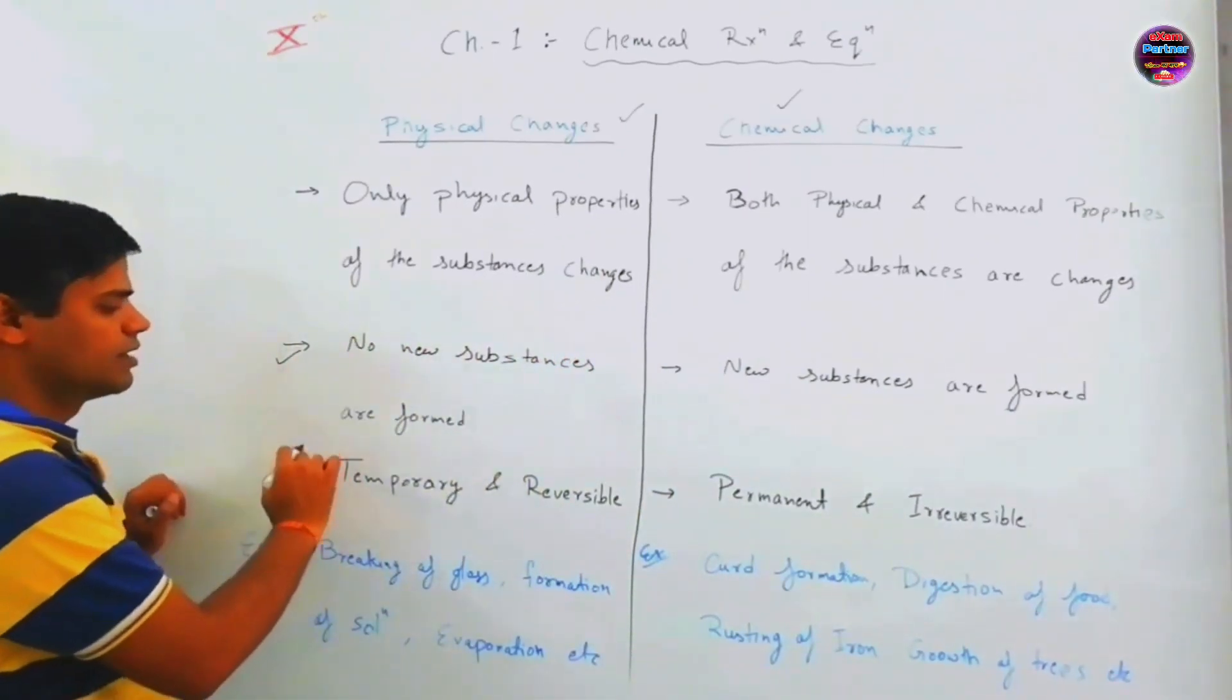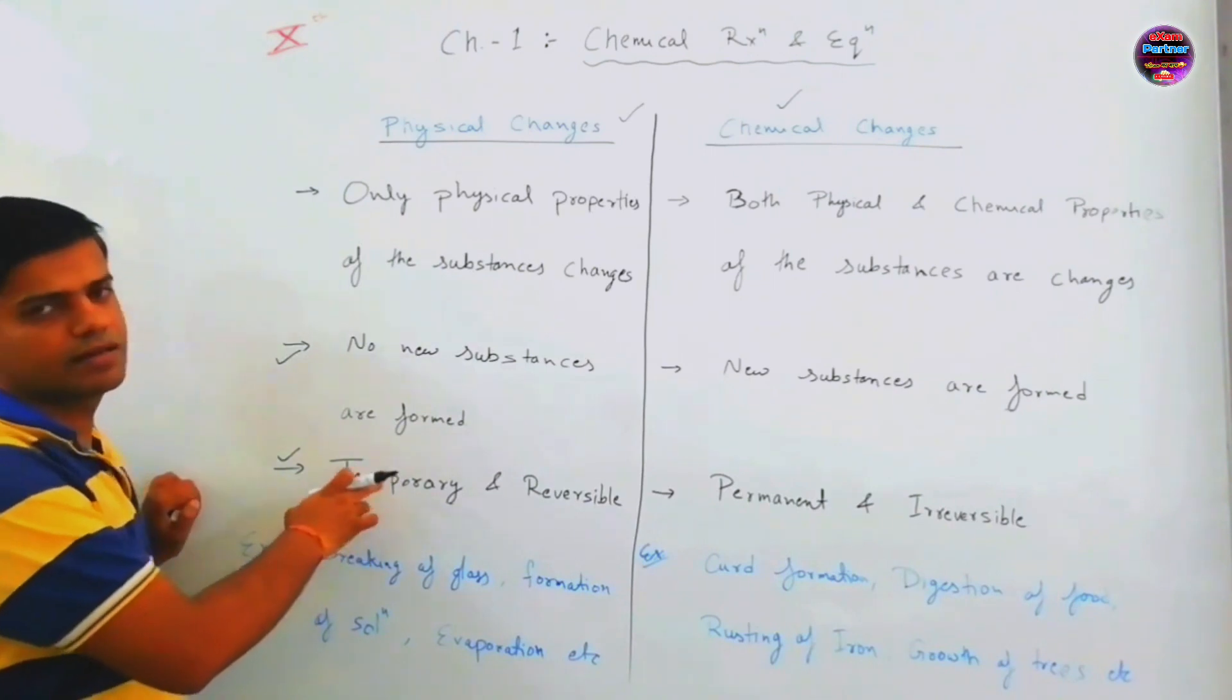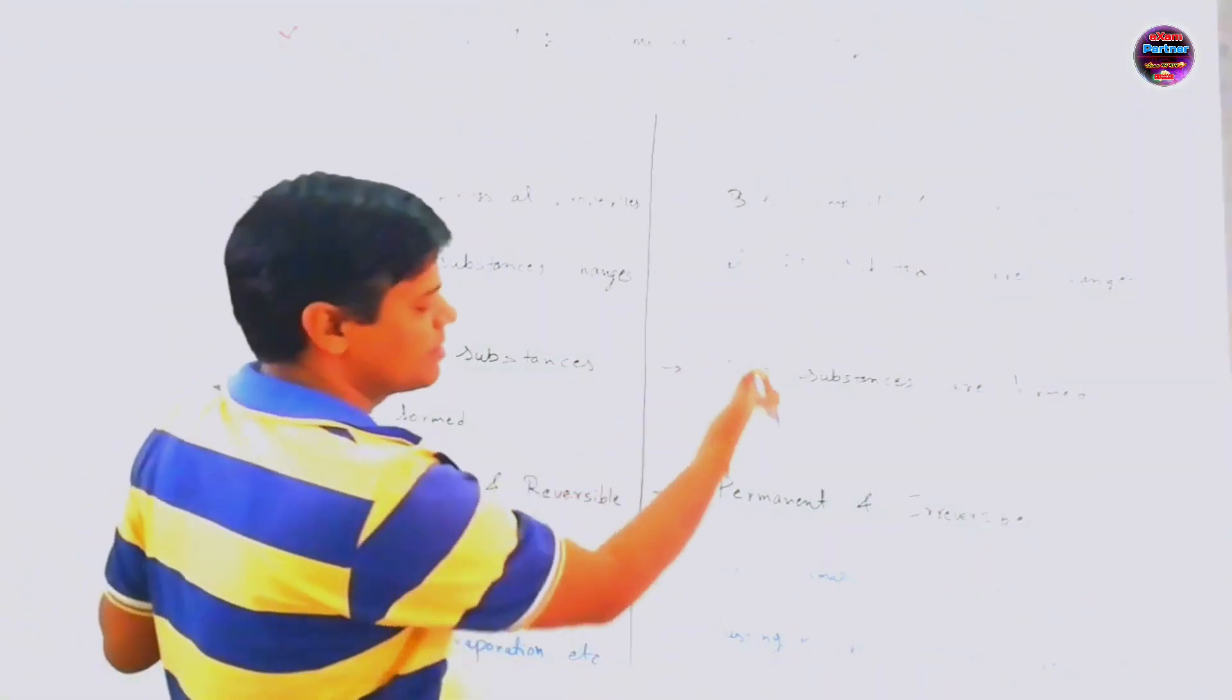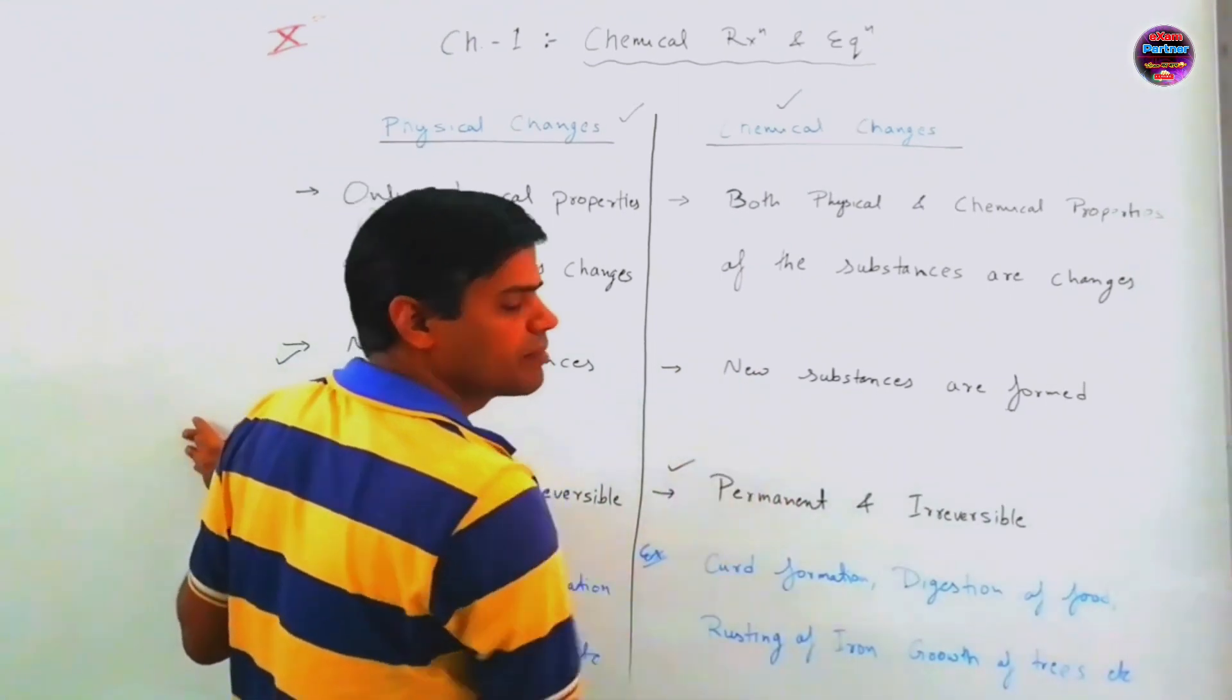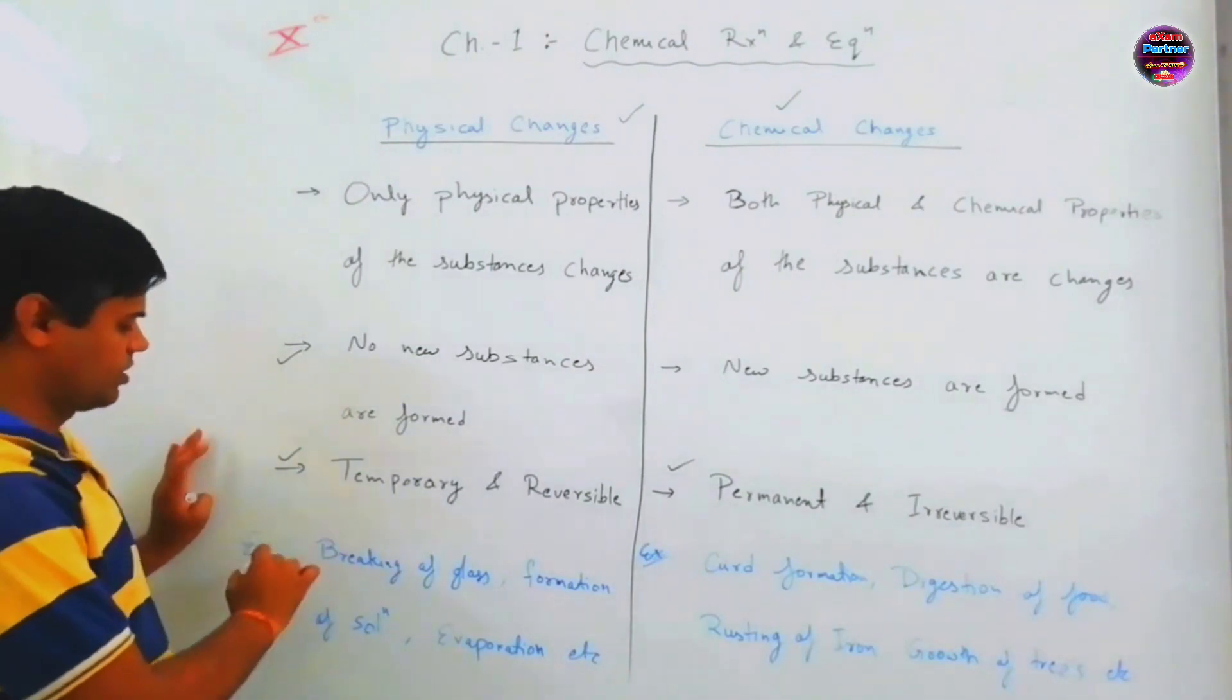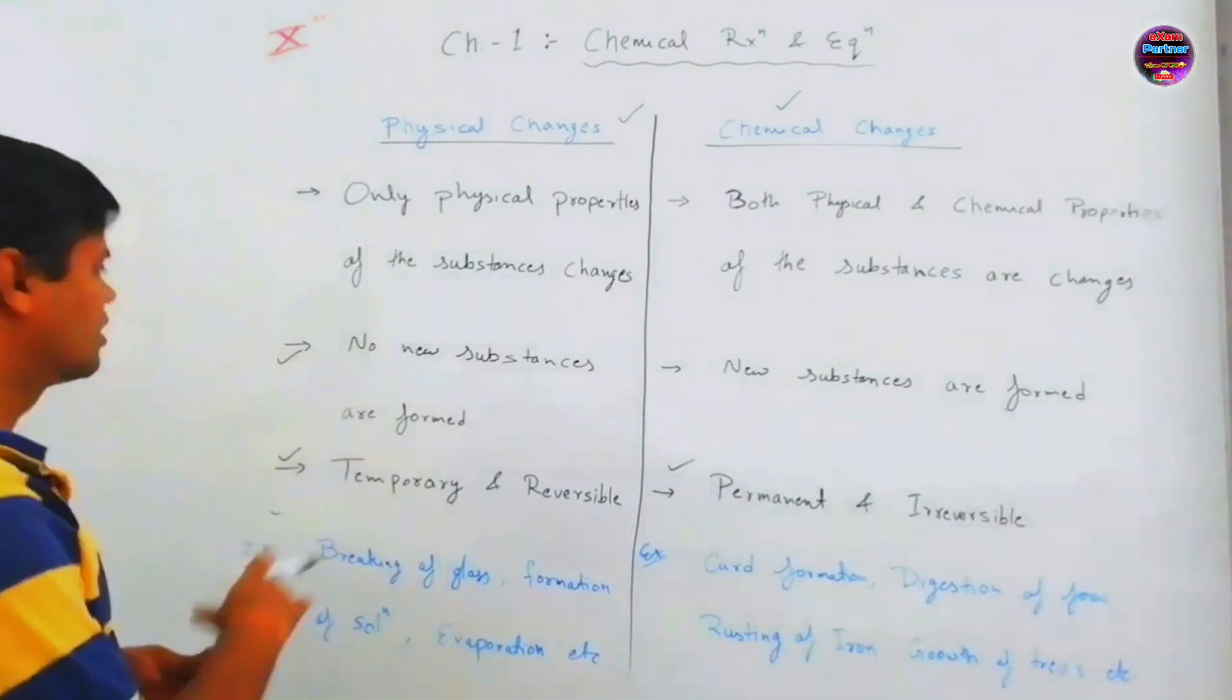Third, physical changes are temporary and reversible. While chemical changes, these are permanent and irreversible in nature.